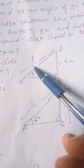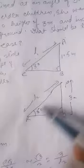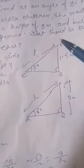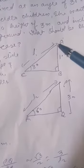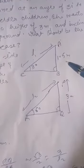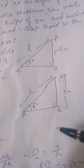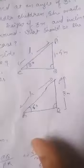Dear students, let AC and PR be the slides in these two cases — for the age below 5 years and for the elder children. So AC, that is L1, is the slide for children below age 5 years, and PR, that is L2, is the slide for the elder children. The height of the top of the slide from the ground for below 5 years is given 1.5 meter, and for the elder children it is given 3 meter. We have to find out the lengths L1 and L2, that is AC and PR, separately.